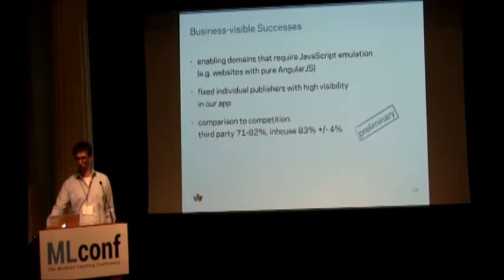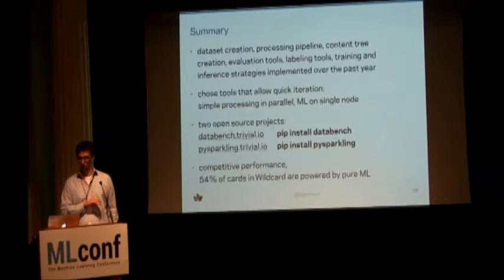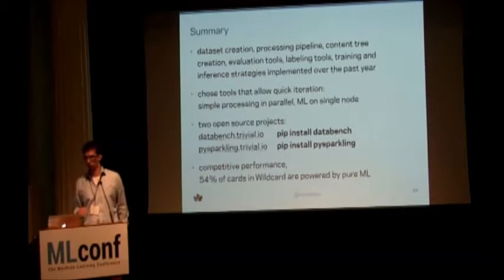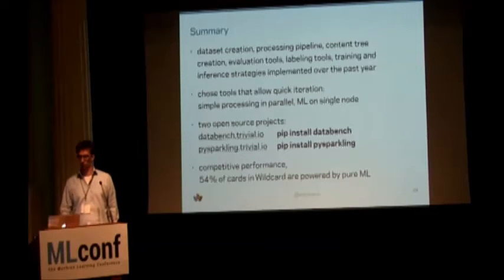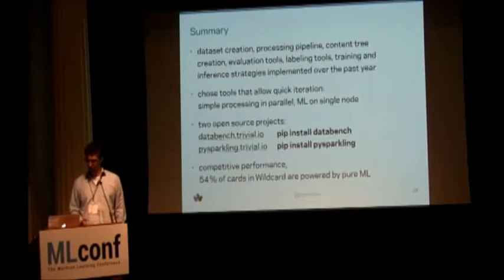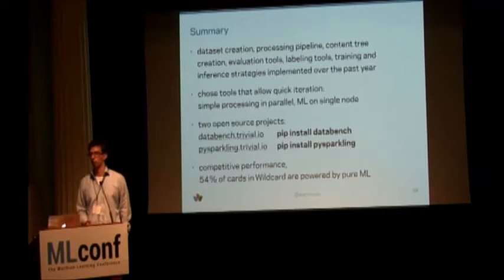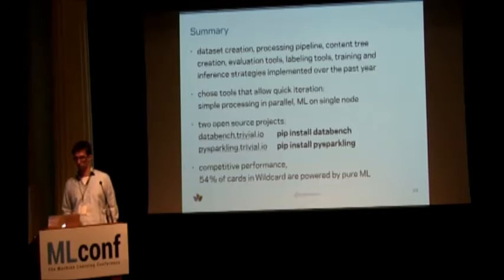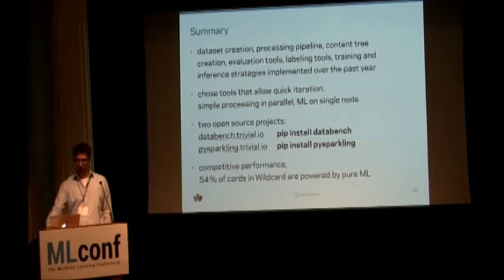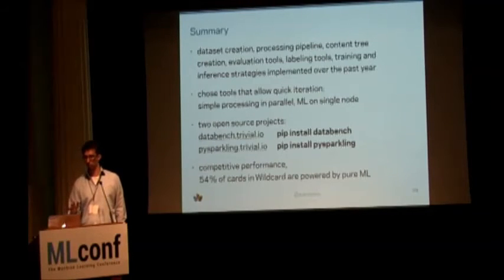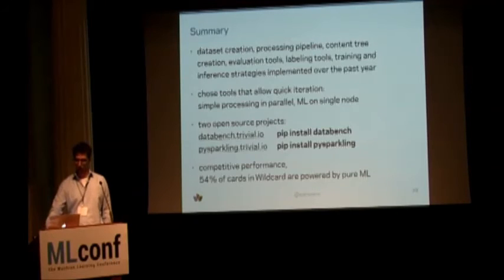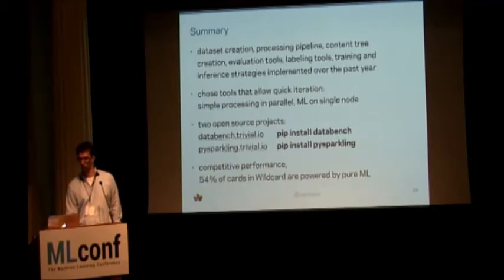So I walked you through an entire machine learning pipeline — what's achievable in a few months. We built a data set, a processing pipeline, features, labeling tools, and came up with an inference strategy that works fast. We chose tools that allow quick iteration — parallel tools for feature extraction and single-node machine learning for more algorithm flexibility. Two open source projects came out of this; please have a look and send comments. We're currently powering 54% of the cards in Wildcard with this method, which is really nice.